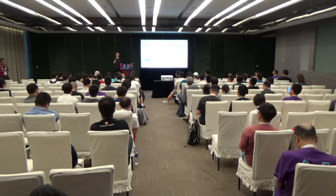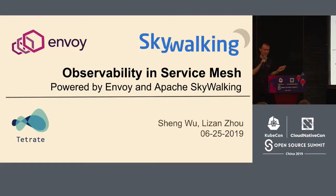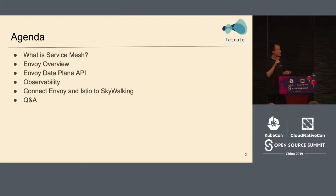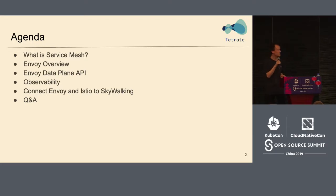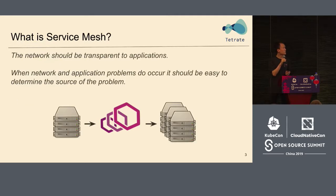I work at Tetris and I was born overseas, so I'm not accustomed to giving speeches in Chinese. This is my second time doing a speech in Chinese. First of all, I'd like to introduce what Envoy is. Some of you may be familiar with service mesh and Envoy. I would like to talk about some of the visibility features of Envoy, and Wu Sheng will tell you how to connect Envoy to SkyWalking.